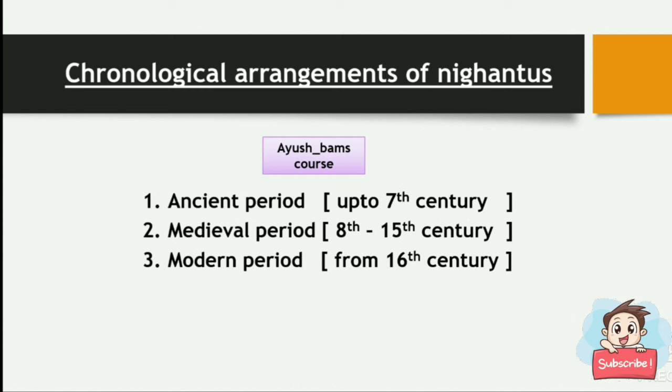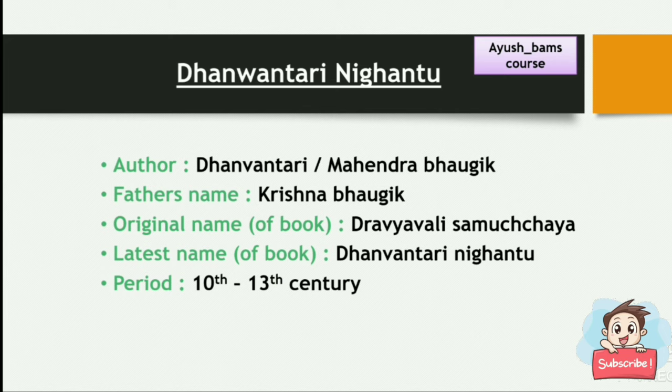Now we are going to discuss Dhanvantari Nighantu, Raja Nighantu, and Bhavamishra Nighantu in detail. The author of Dhanvantari Nighantu is Dhanvantari. His father's name is Krishna Bhavagik. The original name of the book is Dravyavali Samuchaya, but the latest name is Dhanvantari Nighantu. Its period is the 10th to 13th century, and it contains 7 Vargas.